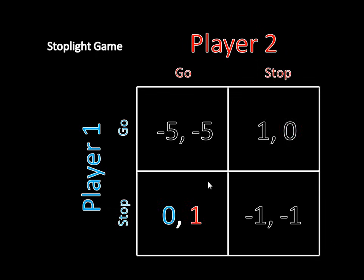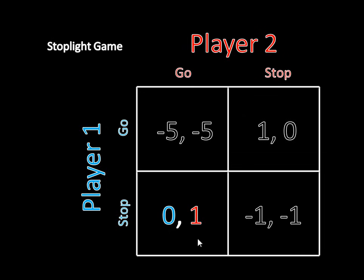For the same reason, there is also a Nash equilibrium where player two is going and player one is stopping — the case where player two has the green light and player one has the red light. Neither player wants to change strategy for symmetric reasons. If player one goes, he crashes into player two, so he's happy stopping. And player two is currently going while player one stops, which is her best outcome. If she were to stop instead, they'd both be stopped in that awkward situation. So everyone is content following whatever the stoplight says.